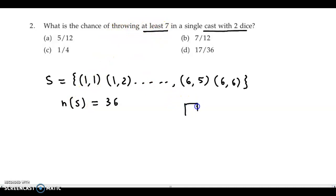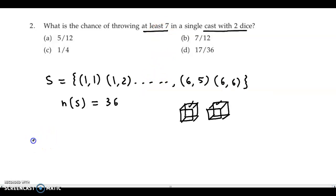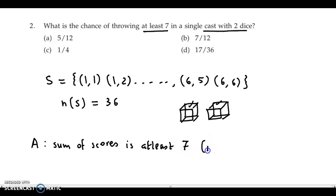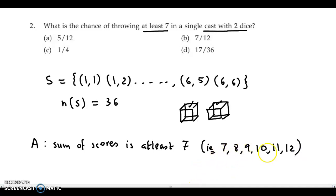We look at both dice — the first dice and the second dice — and the sum of their values should be at least 7. At least 7 means 7, or it can also be more than 7. So we define event A as the sum of scores being at least 7. The totals 7, 8, 9, 10, 11, and 12 are all in our favor.